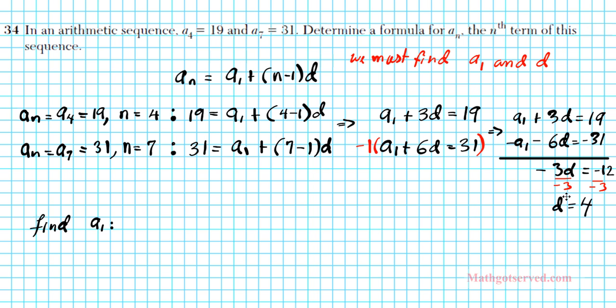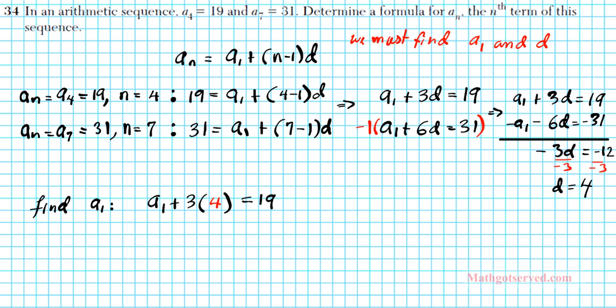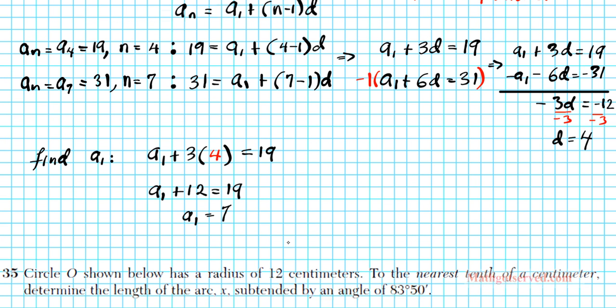Divide both sides by negative 3, and our final answer d is equal to 4. Remember, we must find d and a1. So now, let's use this information to find a1. We're going to plug in this value of d into the equation on top. To find a1, we have a1 plus 3 times 4 equals 19. We have a1 plus 12 equals 19, so a1 equals 7.